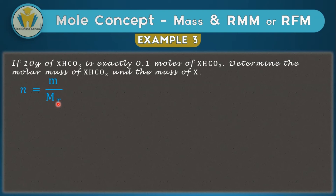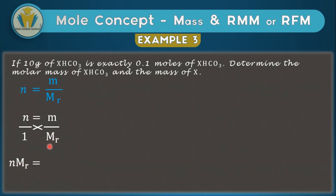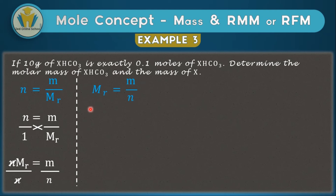Making Mr the subject of n = m/Mr: multiply both sides to get n × Mr = m, then divide both sides by n to get Mr = m/n. This is another useful form of the mole formula. Now we substitute our data: the mass is 10 g and the number of moles is 0.1. Checking units — mass is already in grams. We calculate 10 ÷ 0.1 = 100. So the molar mass of X bicarbonate is 100 g/mol.